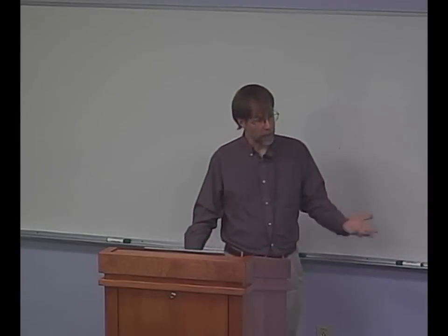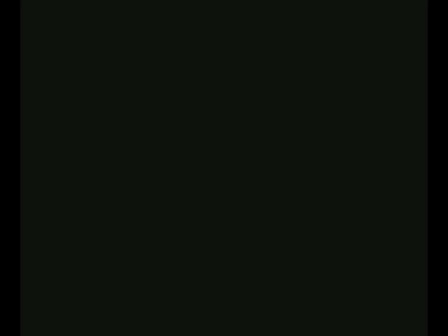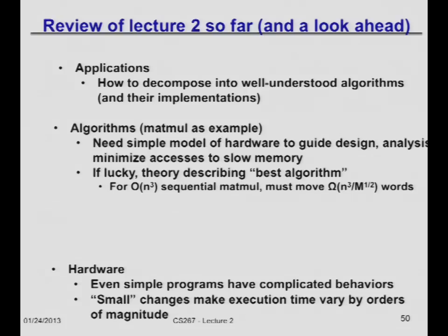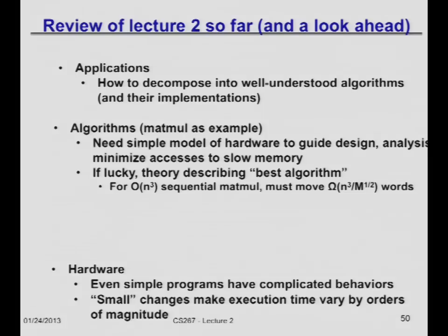This theorem isn't true just for matrix multiply; it's true much more broadly, and we'll come back to that later in the semester. The next thing we're going to do over the course of the semester is: given that we understand there are algorithms that run fast, how do we take our high-level application and decompose it into these pre-existing, well-known, well-understood algorithms so it will run fast? For matrix multiply, somebody's already done a really good job implementing it. How do I find the best library and use it most effectively for my particular problem?